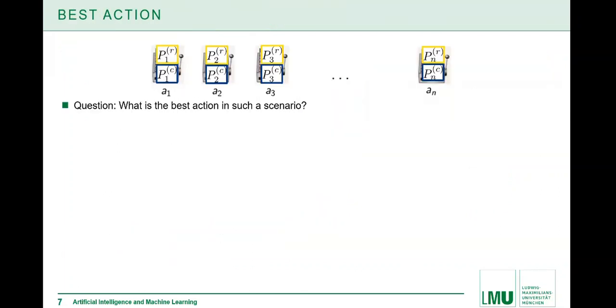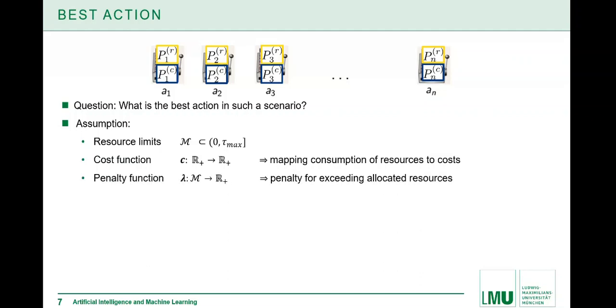Now the question is, what is the best action we can do in each round? To model this in a suitable way we make the following assumption. We have a resource limit graphic M in the subspace of the interval zero to max, so maximum resource limit. We have also a cost function, which is mapping the resource consumption to the same unit as the rewards so that we can compare the two. In addition, we have a penalty function lambda, which penalizes if we exceed the resources in some run.